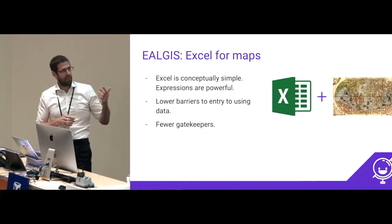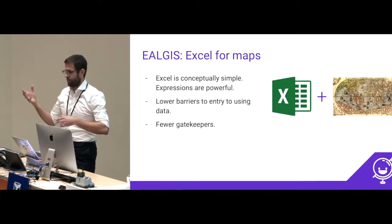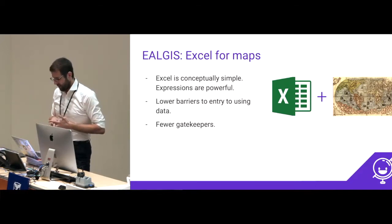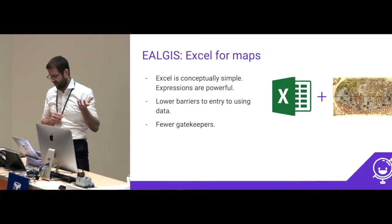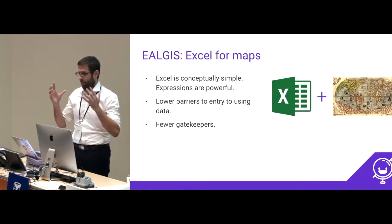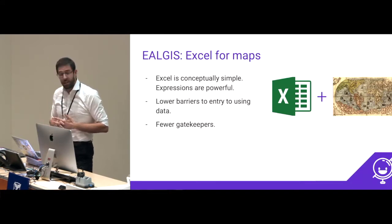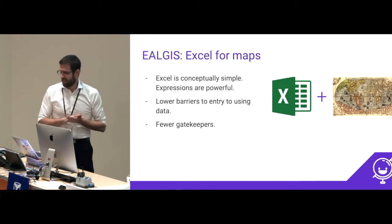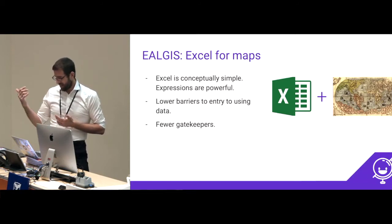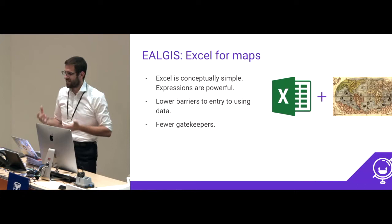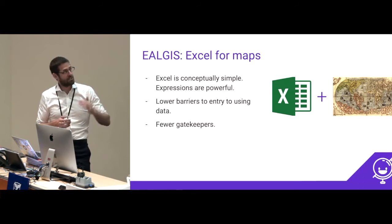We didn't want folks to have to think about finding the data, downloading it, extracting it, finding the right data set, geocoding that data set to LGAs or SA1s and so forth, and then finally getting it onto a map in some fashion. We didn't really want them to have to know about spatial projections or GIS or anything — we know they just want to see something on a map. We also kind of wanted to take some gatekeepers out of the system, in the same way that Excel can remove the need for a database and a DBA. Access to the Census data shouldn't necessarily need a GIS person or an IT person.